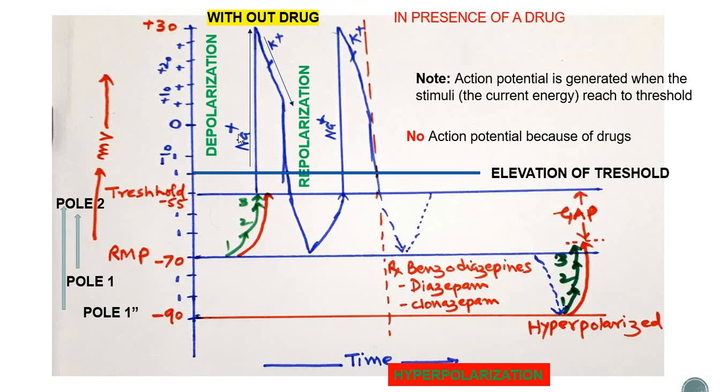The process of depolarization is always associated with action potential generation, whereas it has to be repolarized so that it is prepared for the next event. In case of hyperpolarization, the interior of the neuron becomes more negatively charged, thus it reaches minus 90 mV from minus 70, and this hyperpolarizes the nerve. A strong stimulus is required to excite this particular neuron. Otherwise, the other way around is you can elevate the threshold, and again a strong stimulus is required. The process of depolarization, repolarization, and hyperpolarization is very important in the practice of medicine. Thank you.